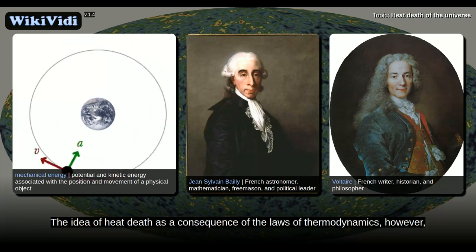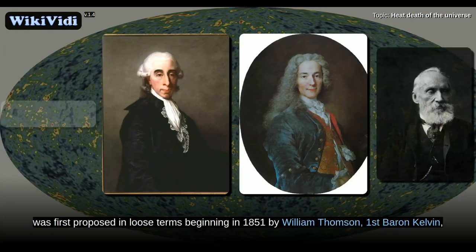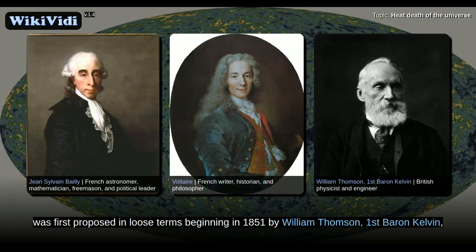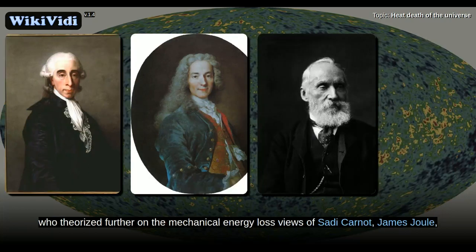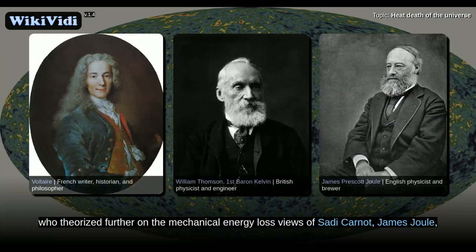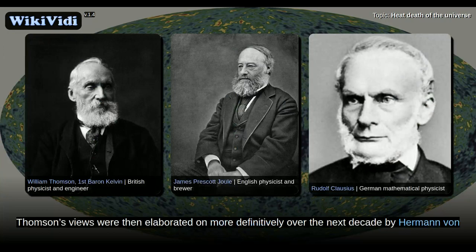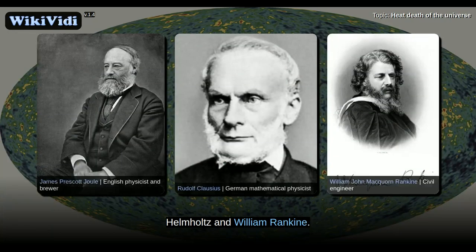The idea of heat death as a consequence of the laws of thermodynamics, however, was first proposed in loose terms beginning in 1851 by William Thomson, Baron Kelvin, who theorized further on the mechanical energy loss views of Sadi Carnot, James Joule, and Rudolf Clausius. Thomson's views were then elaborated on more definitively over the next decade by Hermann von Helmholtz and William Rankine.